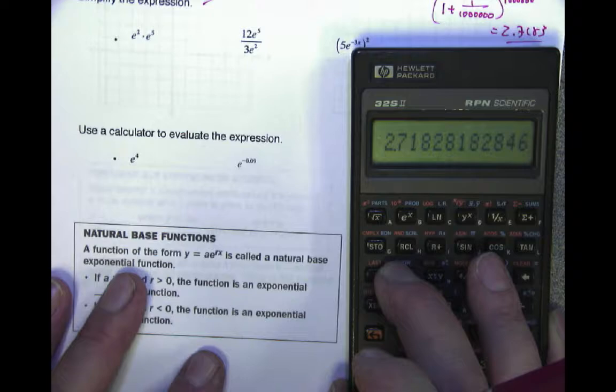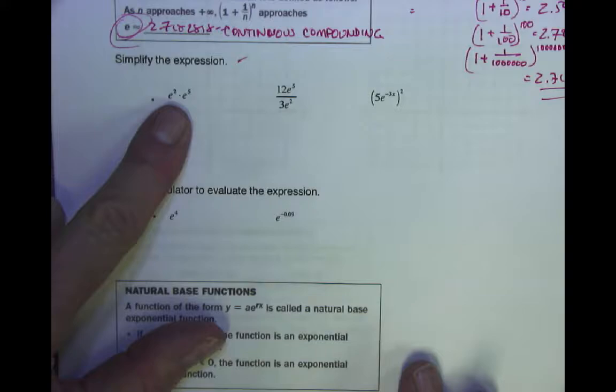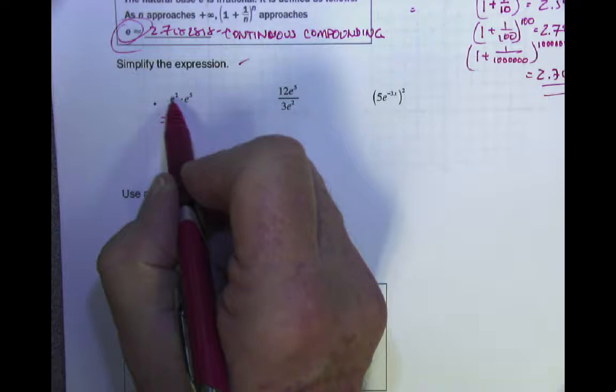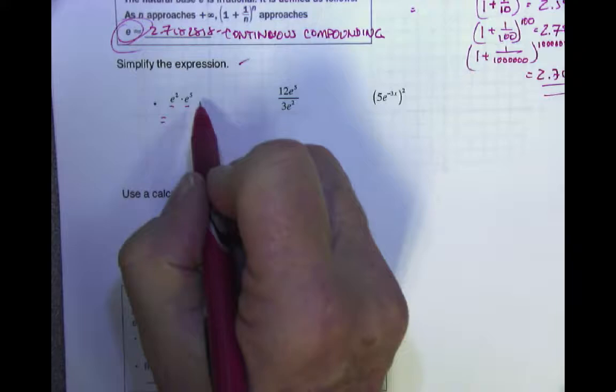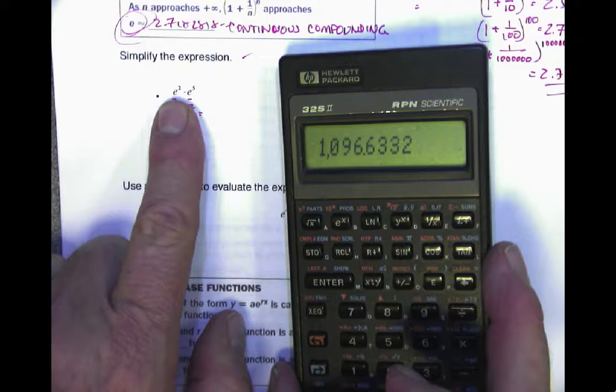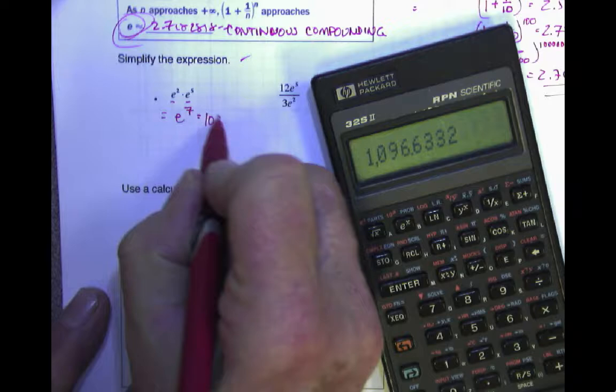So E just refers to continuous compounding. You want to treat it like a variable, but it's a number. When we have a common base and we're multiplying, we add the exponents — so E to the 3 times E to the 4 gives E to the 7. What is E to the 7? That's 2.718 to the 7th power, which equals 1096.6332.